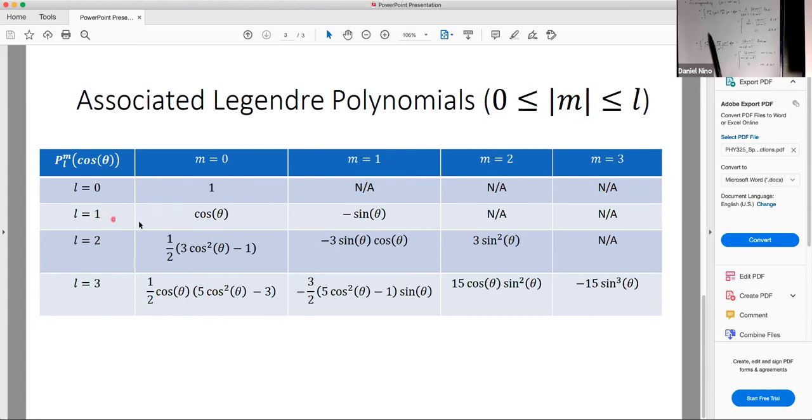When l is equal to one, and m is equal to zero, P_m^l is just equal to cosine theta when the argument is cosine theta. So it's just equal to x in general. And when m is equal to one is equal to minus sine theta. Again, for larger values of m, these polynomials are not defined. And the list goes on for different values of l and m. And you can generally find these expressions in mathematical tables for these polynomials.